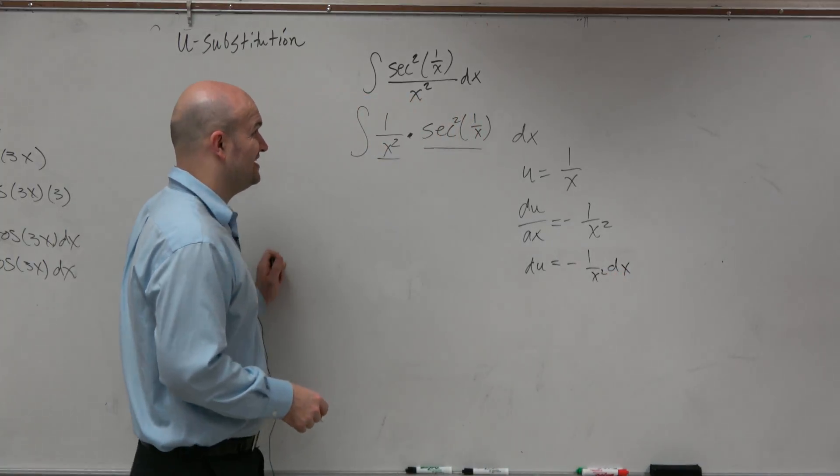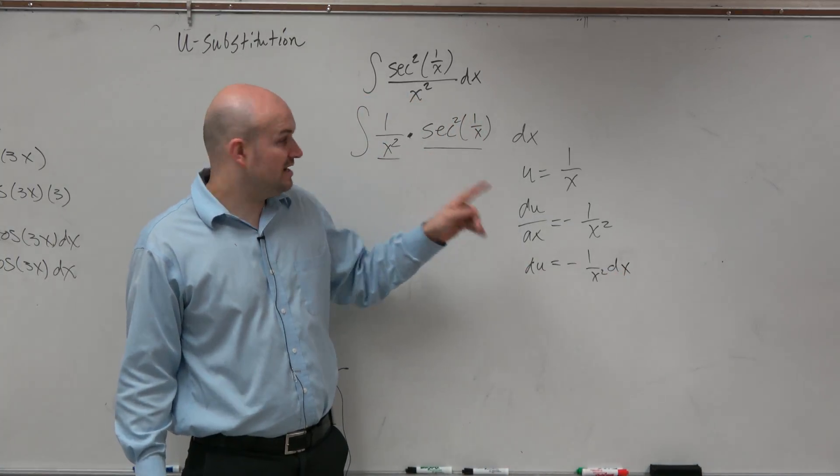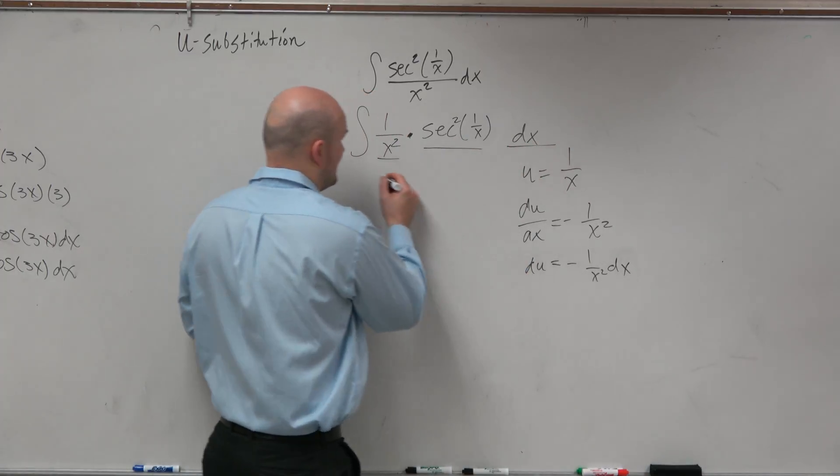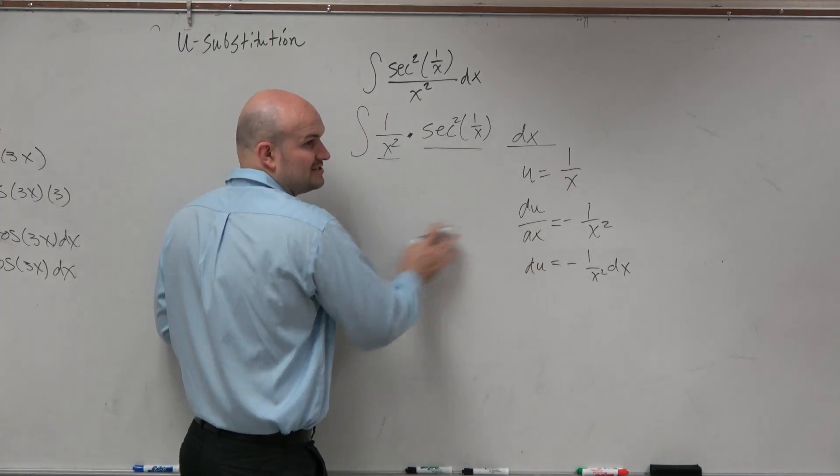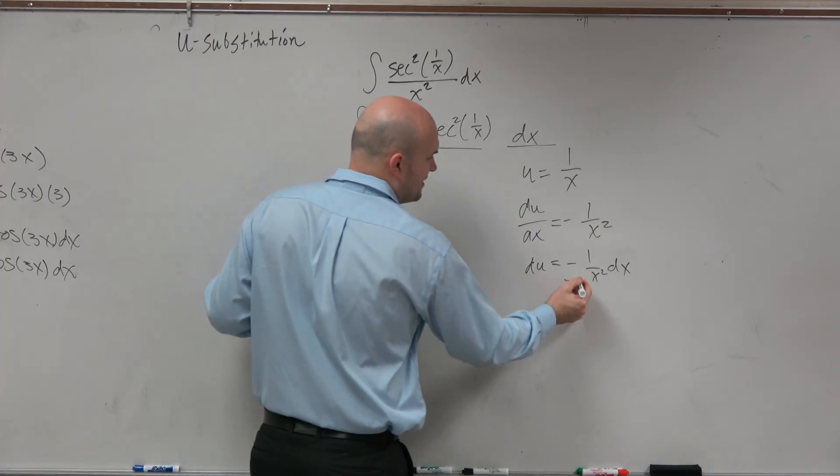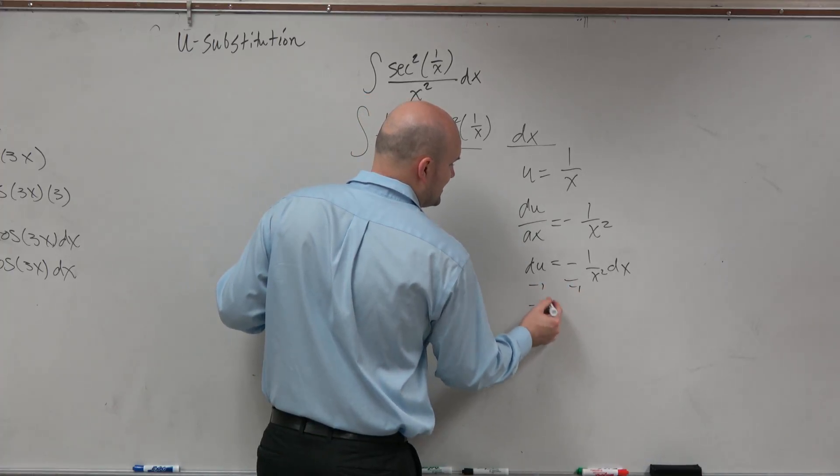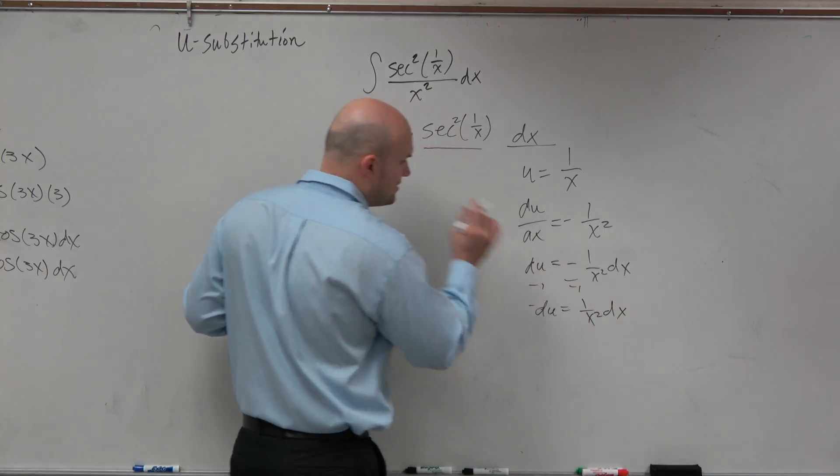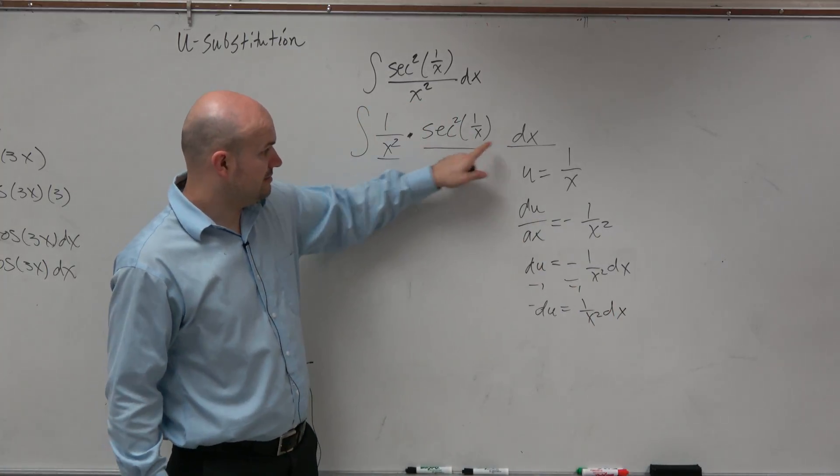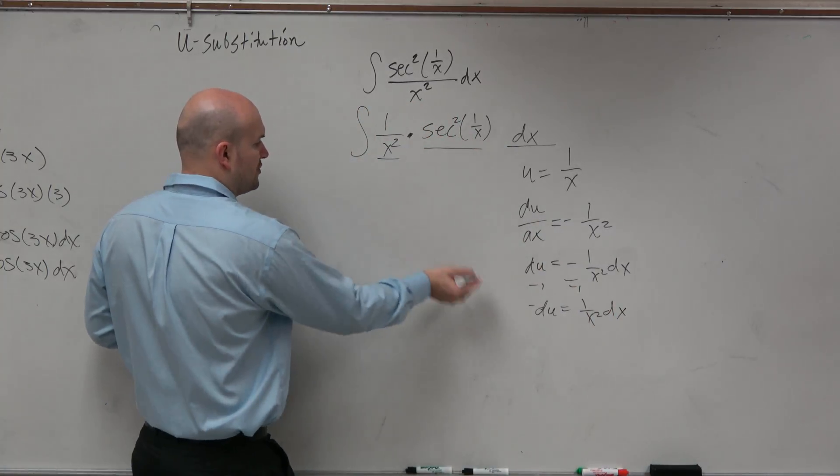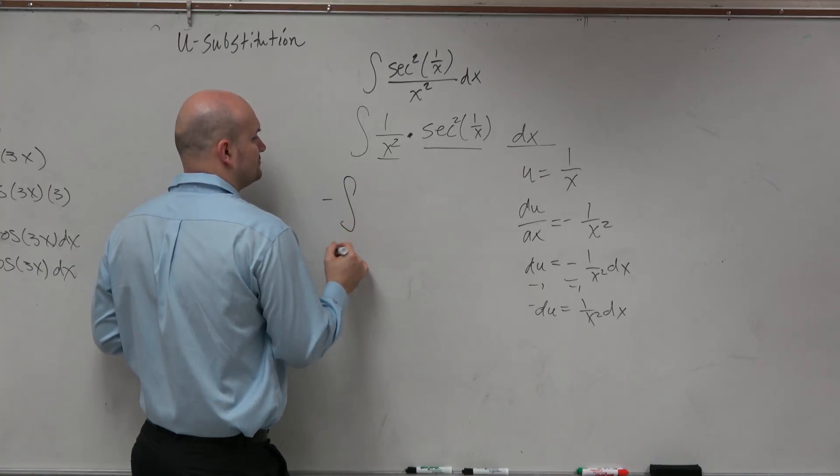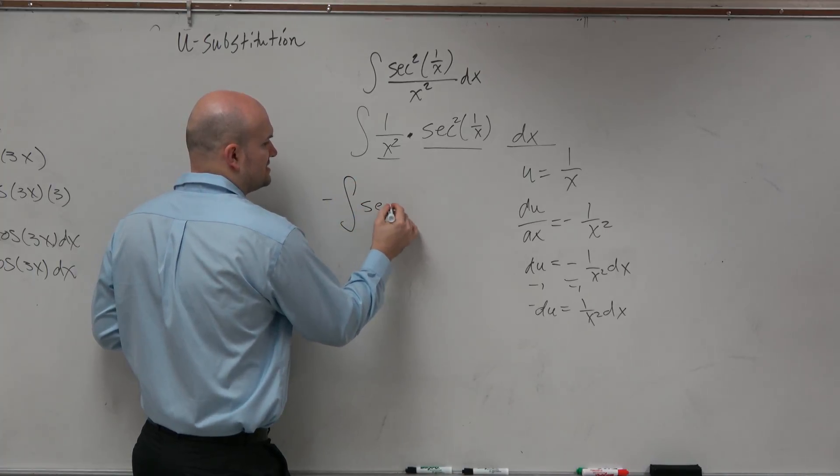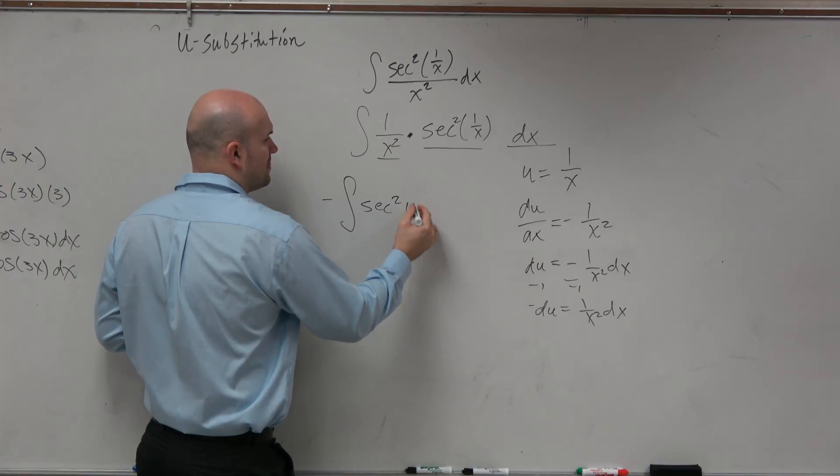So guys, the only thing I don't have is that little negative, right? I basically have dx, and I have 1 over x. I just don't have the negative. So I could divide by negative 1, negative 1. I could say negative du is equal to 1 over x squared dx, right? So I could throw that negative on the outside. And I could say this is secant squared of u, du.